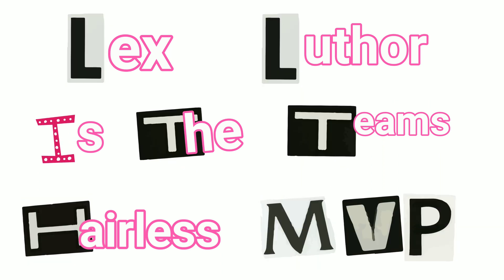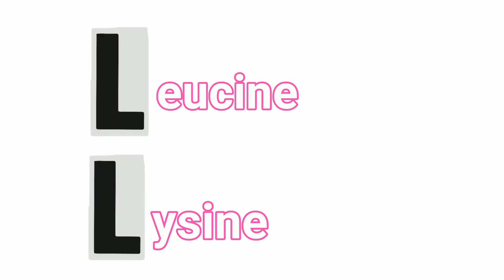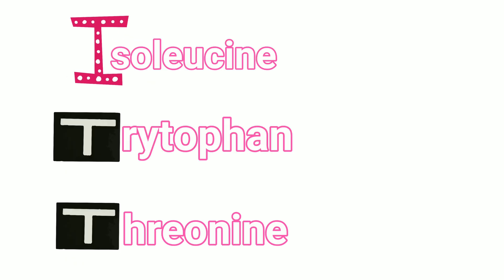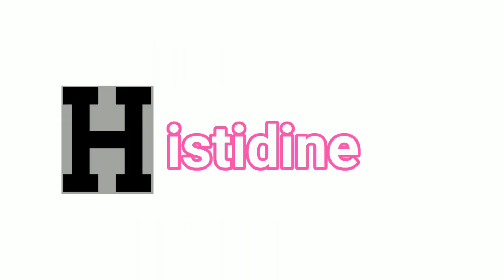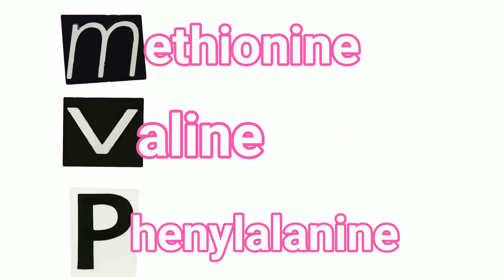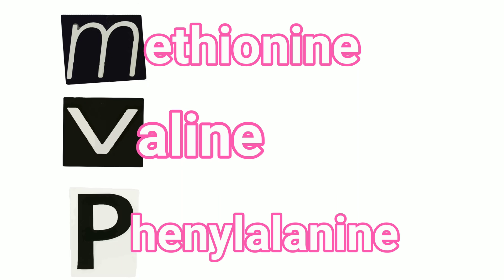Where the L and L in Lex Luthor is leucine and lysine. I-T-T is isoleucine, tryptophan, and threonine. H is histidine. And M-V-P: M is methionine, V is valine, and P is phenylalanine.